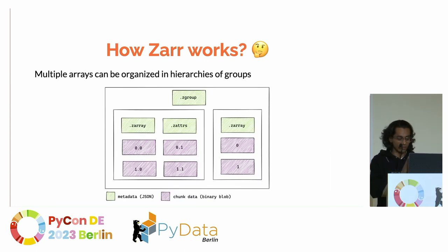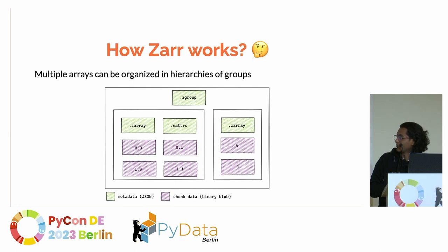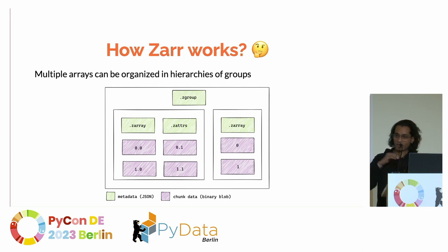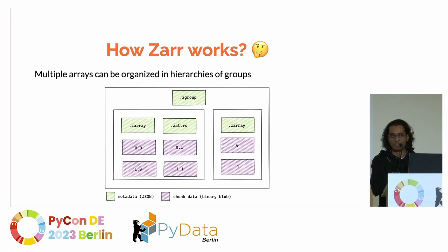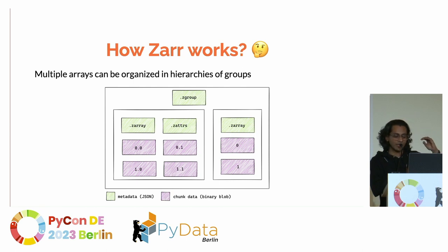This is what a ZAR group looks like — it's a container. The actual data is the binary blob. On top of it, we have metadata. .zarray contains all the important information about your ZAR array: what compressor was used, how many chunks, along which dimension the data was chunked. .zattrs stores custom attributes you can add to your dataset — things like time the data was taken, who created it, how it should be accessed. .zgroup stores how multiple arrays are organized in hierarchies.